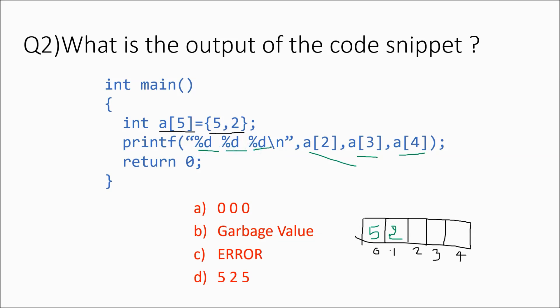So what are you going to get? Option A: 0, 0, 0. Option B: garbage values. Option C: an error. Option D: 5, 2 repeating. What is going to happen?